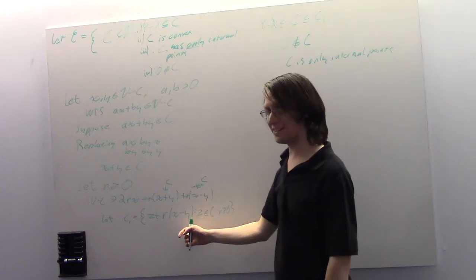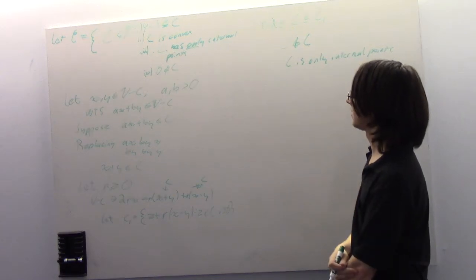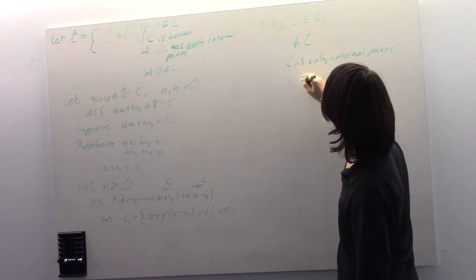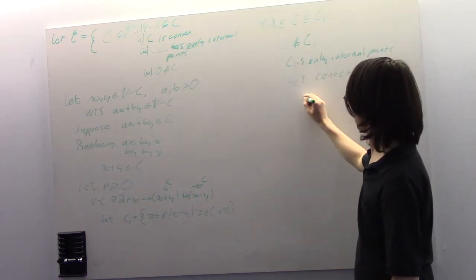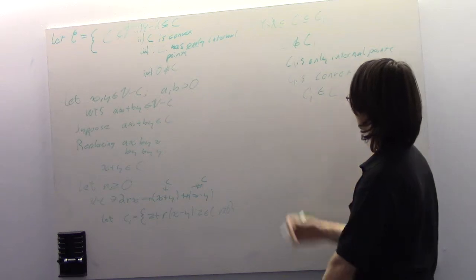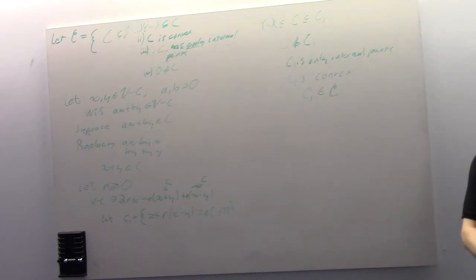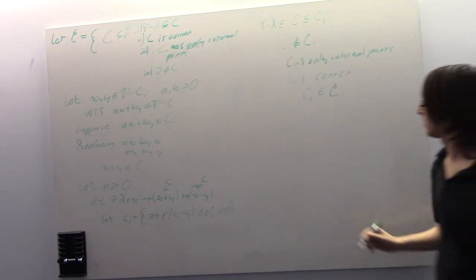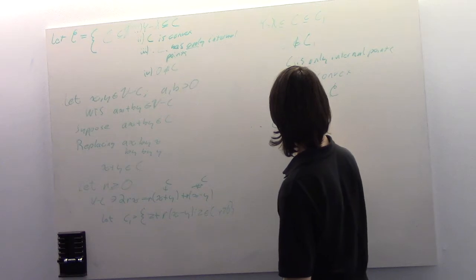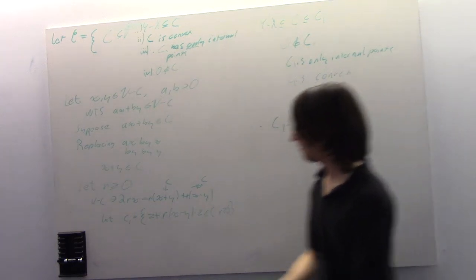C contains only internal points, so these are only things not in C plus things in C, meaning zero is not in C. C is convex, and C1 is a bigger element of the collection script-C than C. Therefore C1 equals C — but this has an element of V minus C.